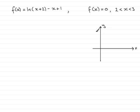If I was to draw the graph of f(x) equals the natural log of x plus 2 minus x plus 1, I'm not too sure what it would look like but what I'm going to do is work out the values at x equals 2 and x equals 3.